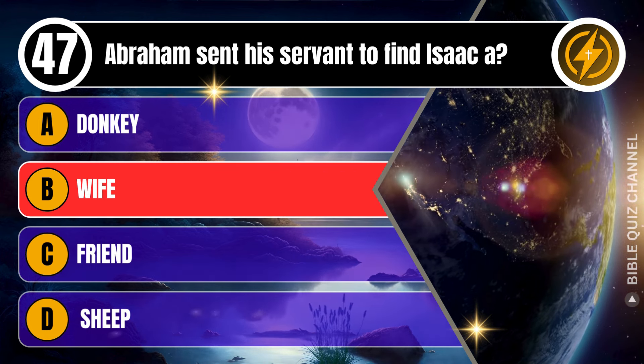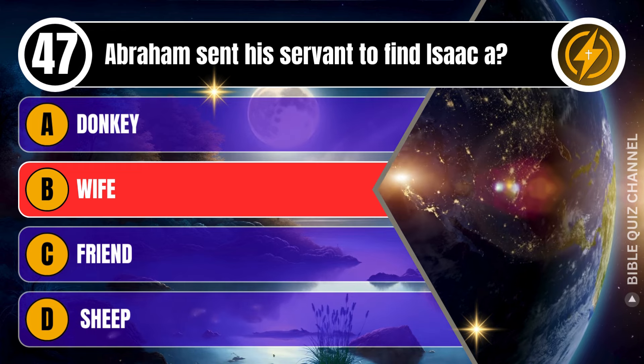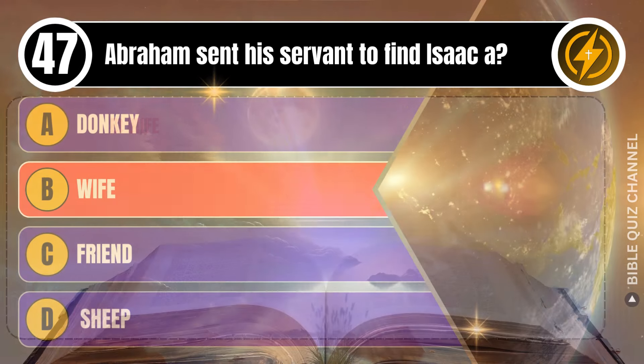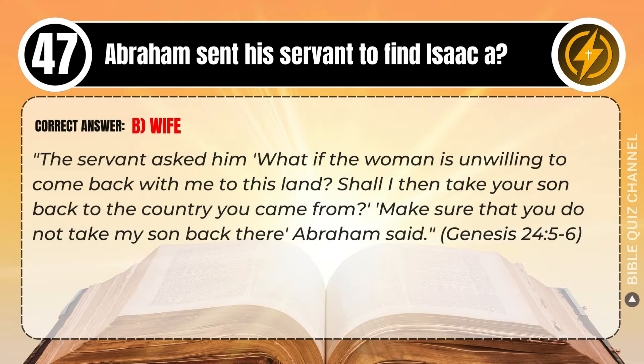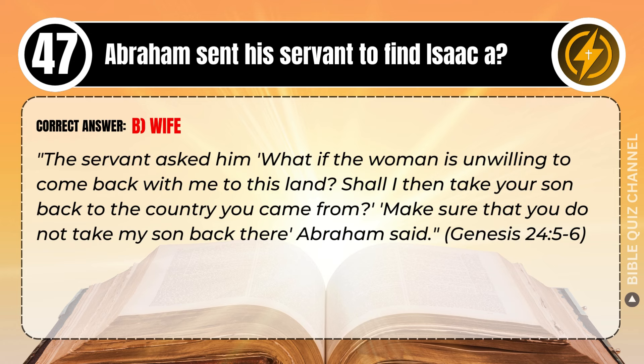Correct answer: B. Wife. Explaining the Bible — The servant asked him, 'What if the woman is unwilling to come back with me to this land? Shall I then take your son back to the country you came from?' 'Make sure that you do not take my son back there,' Abraham said. Genesis, chapter 24, verse 5-6.